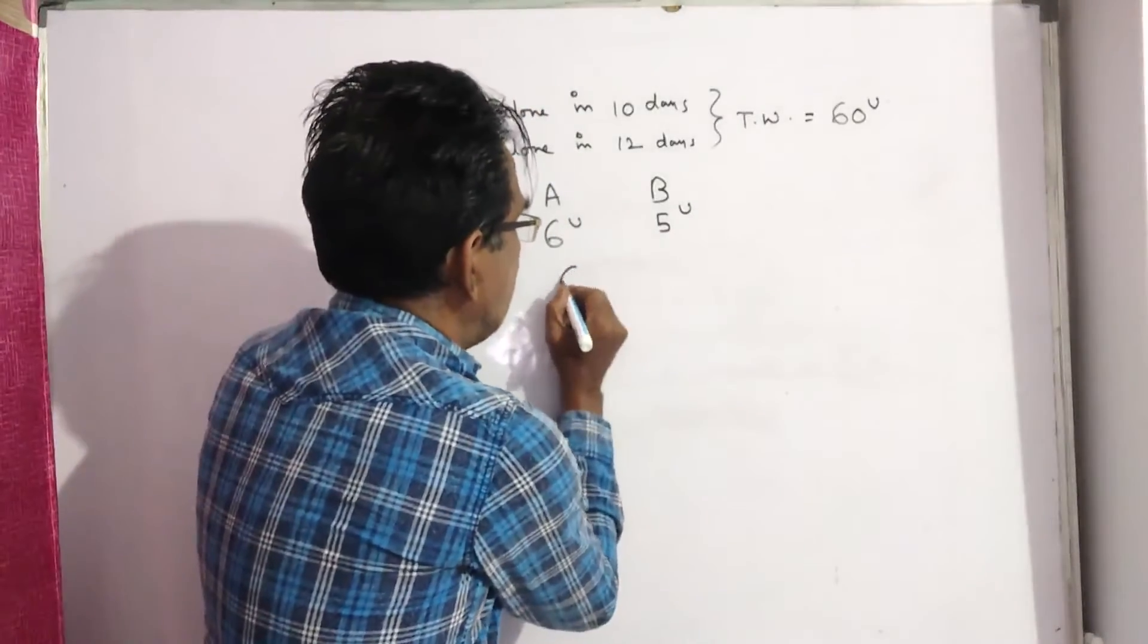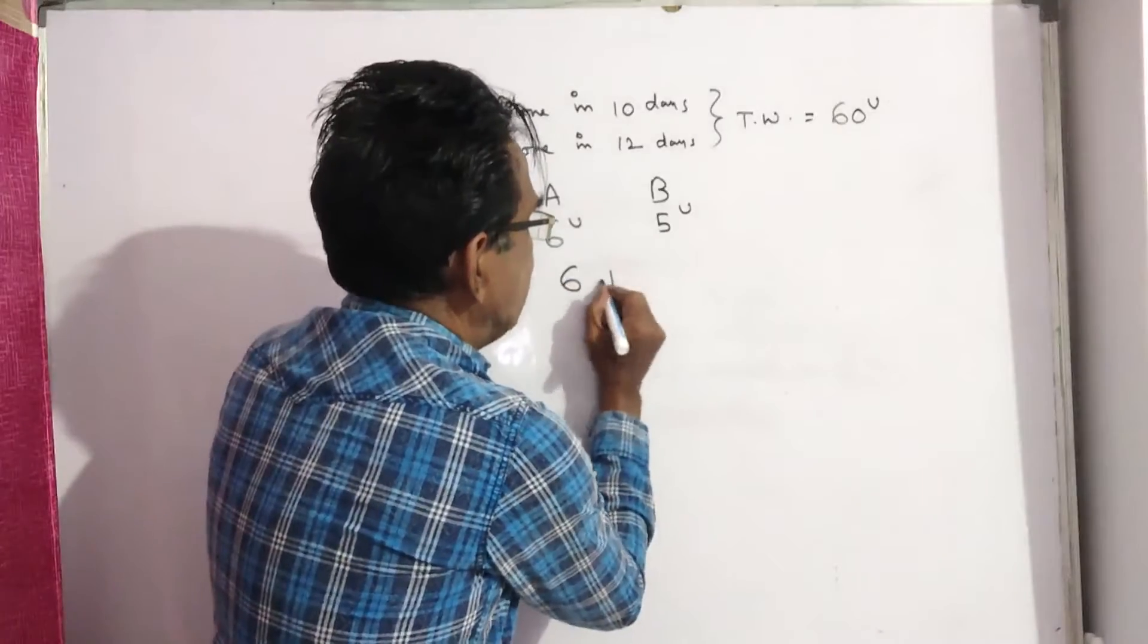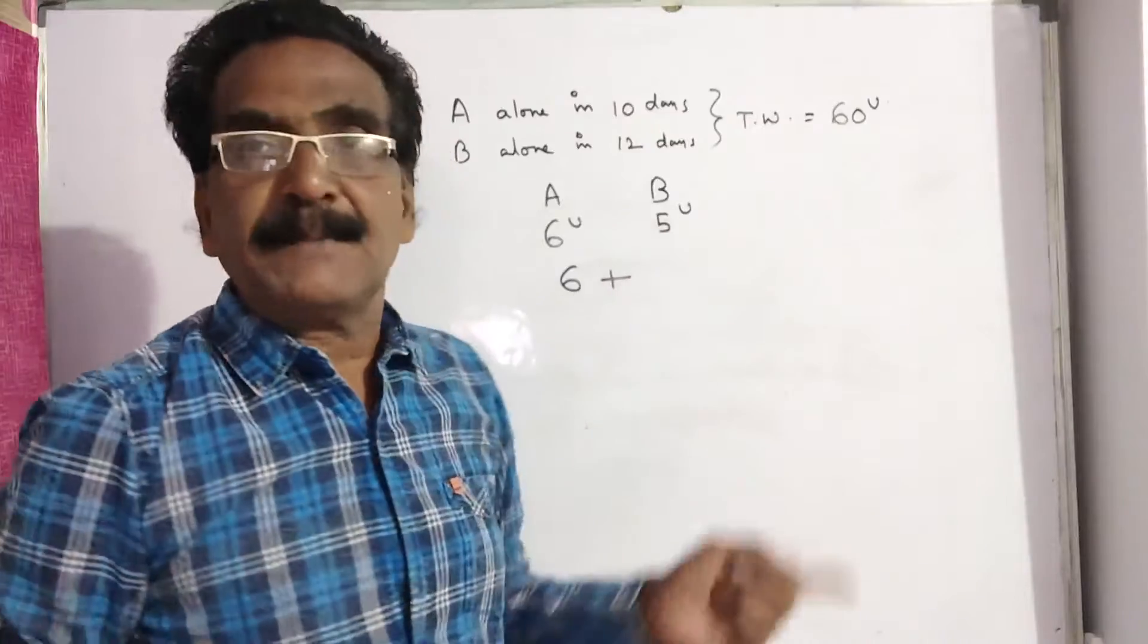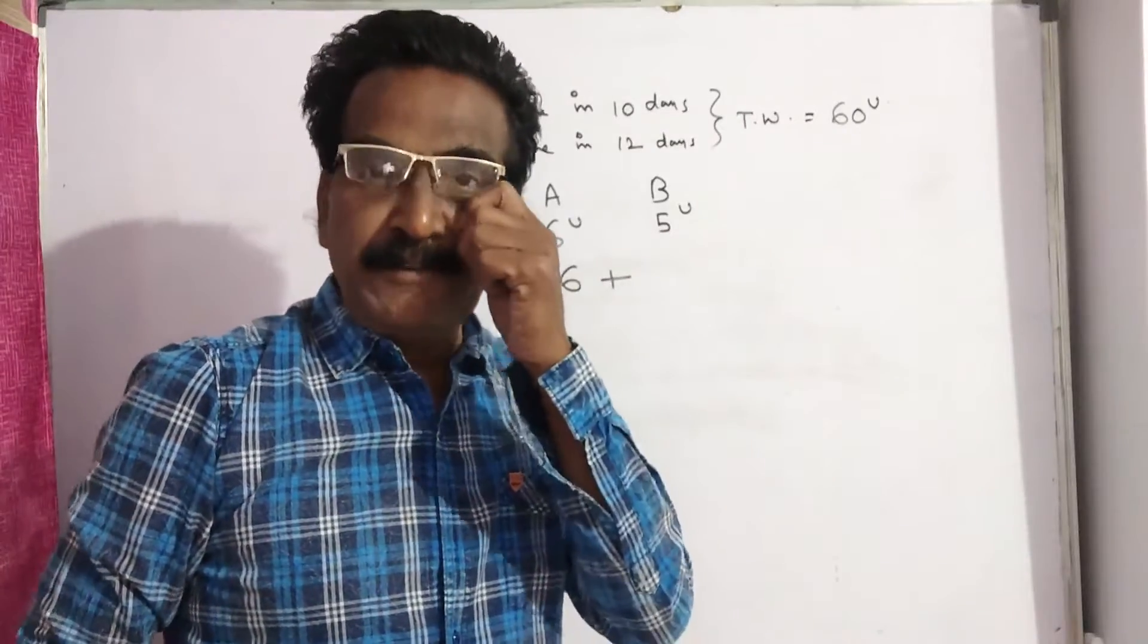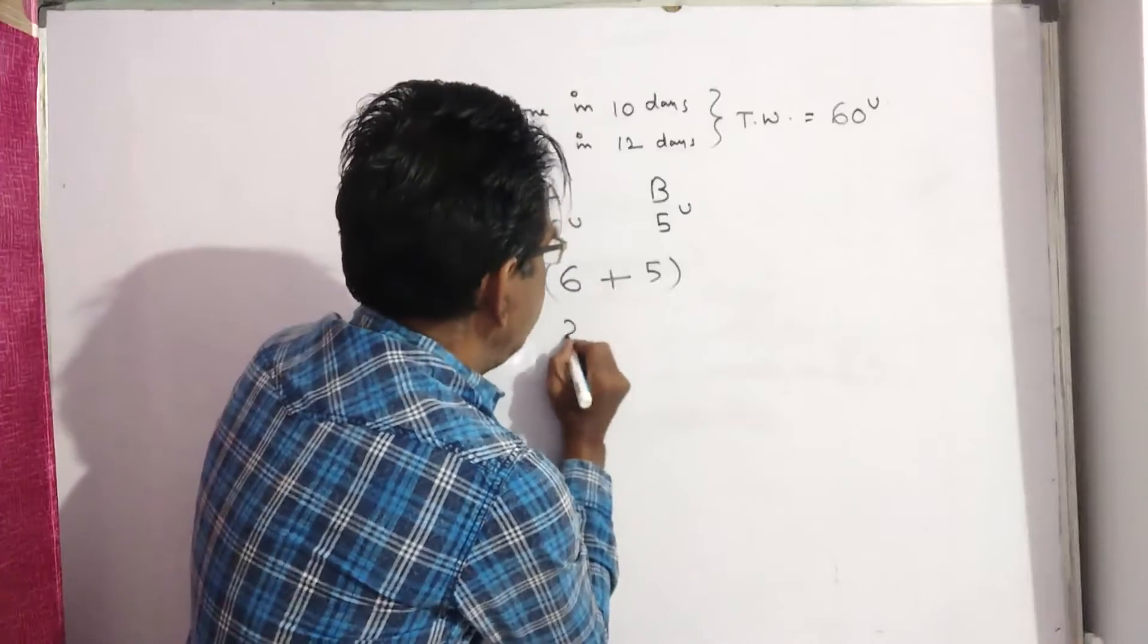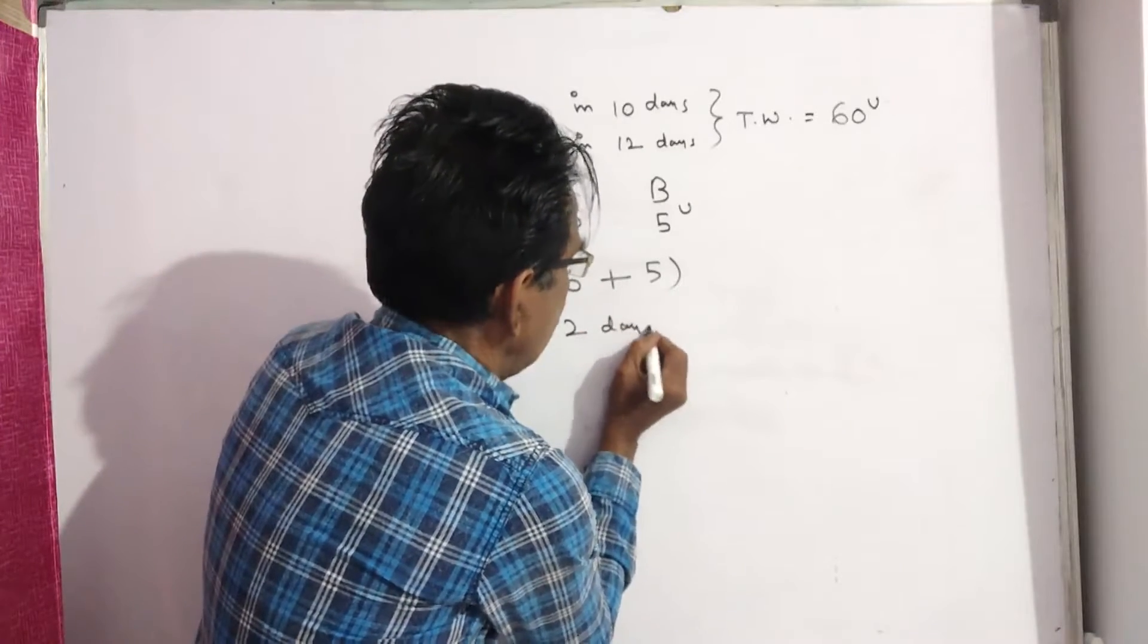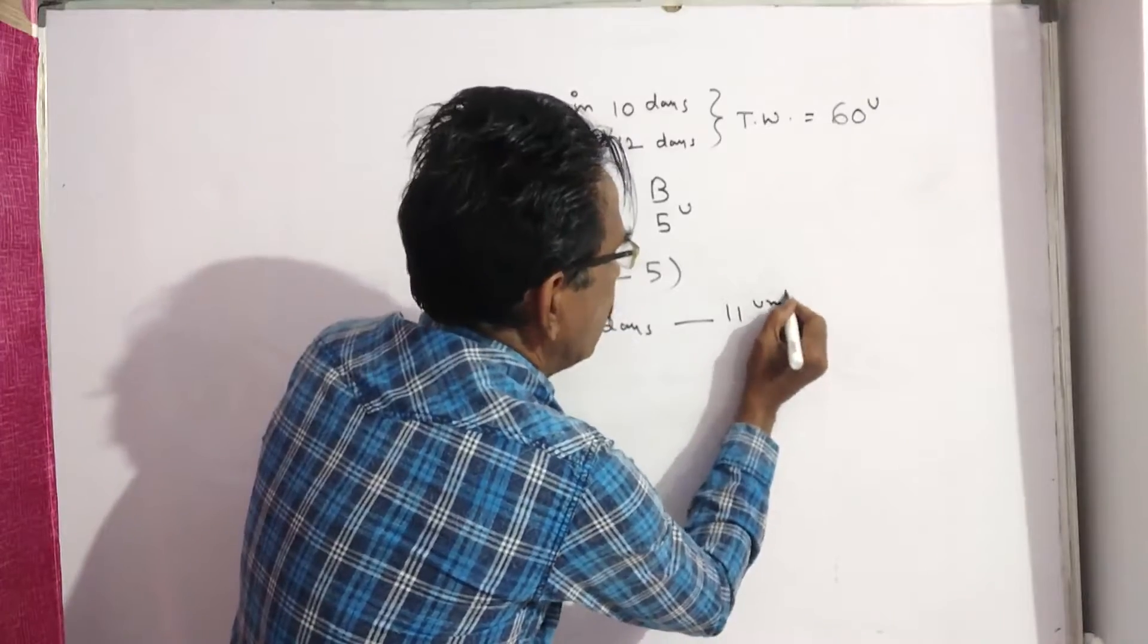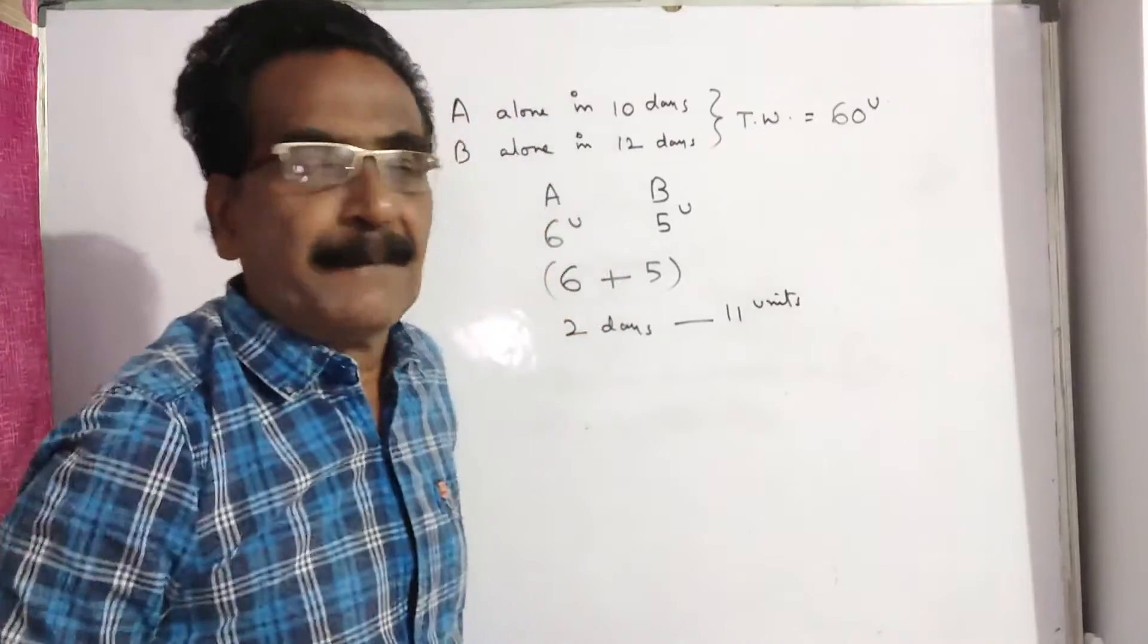First day A comes and does 6 units of work, second day B comes and does 5 units of work. So in every 2 days, 6 plus 5, that is 11 units of work will be completed.